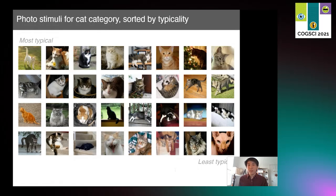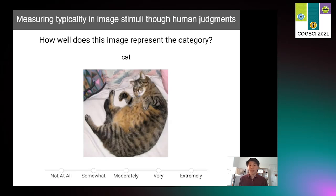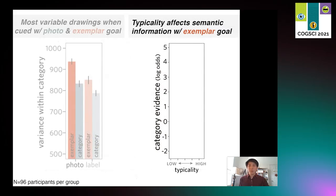However, if it is true that what really drives the category evidence in a drawing is how much category diagnostic information it contains, then we predict that, at least among photo-cued exemplar drawings, that drawings made from more prototypical cues like the cats in this top row of the drawing would contain more category evidence than those cued from more atypical images like these cats in the bottom row. To test how typicality of photo cue stimuli affected the semantic information contained in drawings, we conducted another study for which each photo in our stimulus set, 10 people were shown the image and were asked how representative each image was of their respective category, giving us estimates of the typicality of each photo.